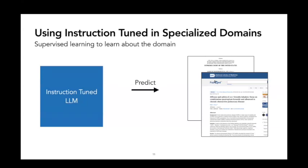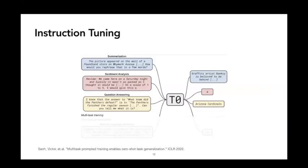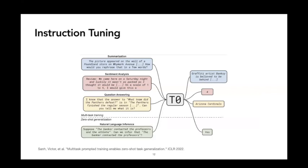Instead, you can do instruction tuning, or supervised learning with instructions. This is what many off-the-shelf models do. In this approach, we train the model with multiple instruction-response pairs. These instructions could be something like, how would you rephrase that in a few words? Or, on a scale from 1 to 5, how would you rate this review? Once you train the model on enough instructions, this enables the model to generalize to new tasks, so at test time you can ask new tasks the model has never seen before.